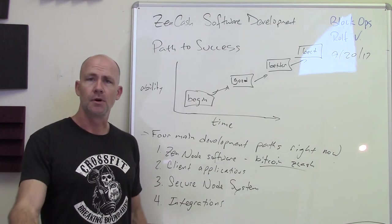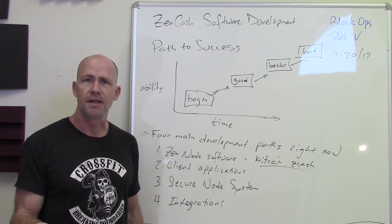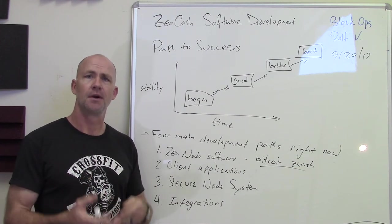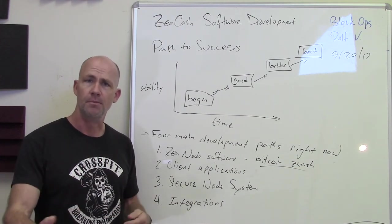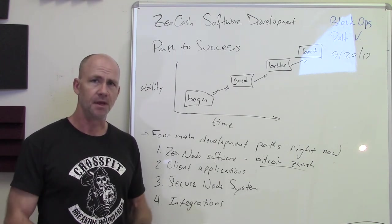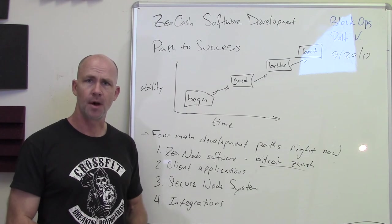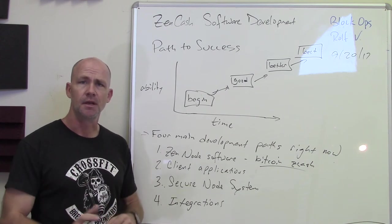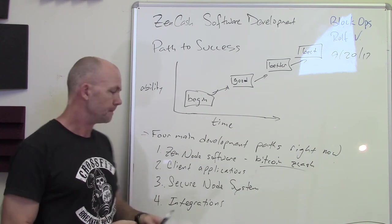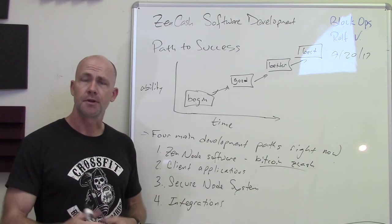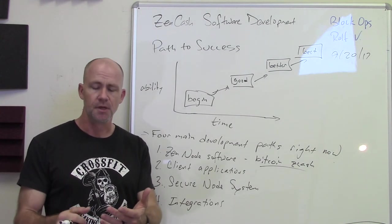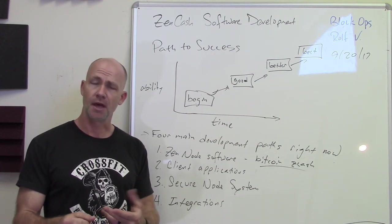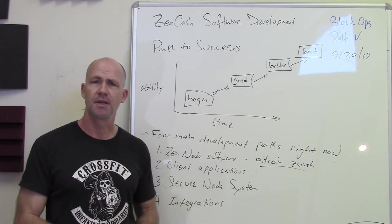The secure node system is another key area. One of the things we think is important at Zencash is the ability to have secure nodes — nodes that are reliable, use encrypted transport, and have the ability to do additional things. I'll talk about where the secure node tracking and payment system is in the development cycle. And integrations — our software development also works on integrations with multi-coin wallets, exchanges, payment gateways, and things like that.